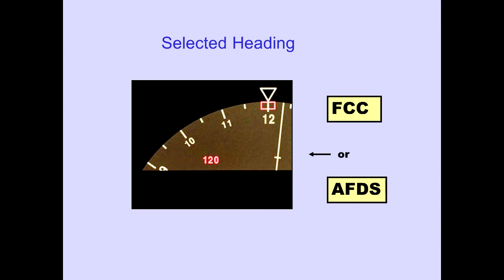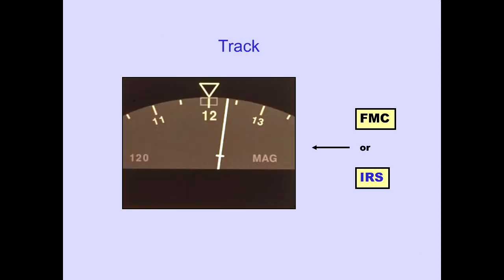The selected heading is displayed digitally and is also indicated by the double box below the arc. The selected flight control computer, or Autopilot Flight Director system, provides this information. Track is displayed as a solid white line, provided by the flight management computer or IRS.